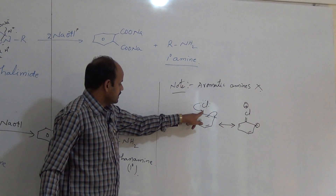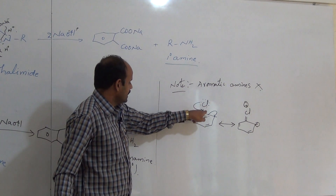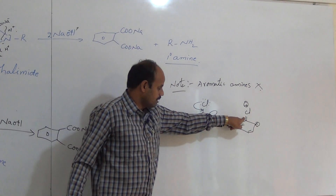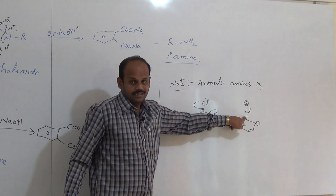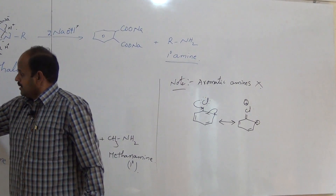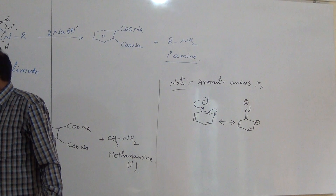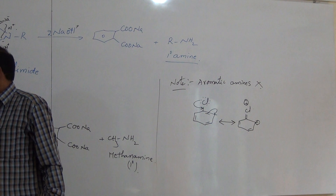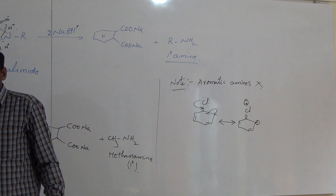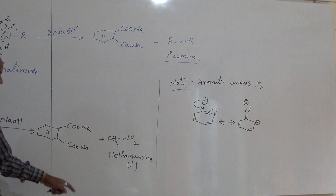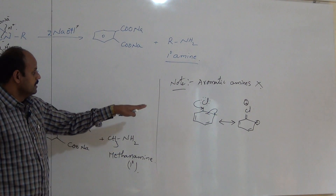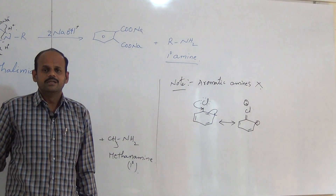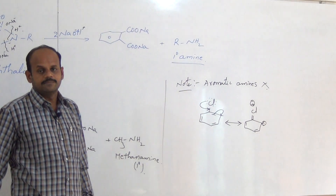The reason is that double bond character develops between the halogen atom and the carbon in the aromatic ring, making this bond strong — it does not dissociate easily. Thus aryl halides do not react with N-potassium phthalimide. Only alkyl halides react with potassium phthalimide, so we can prepare aliphatic amines only, not aromatic amines, by this method.